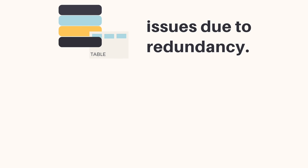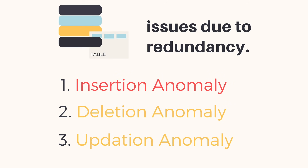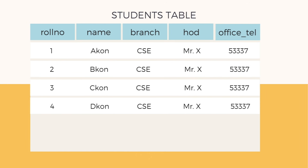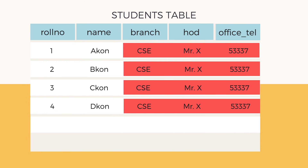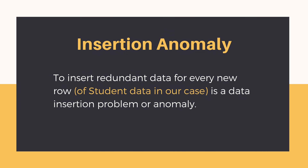There are three main problems that data redundancy causes: insertion anomaly, deletion anomaly, and updation anomaly. Let's start with insertion anomaly. If we have to add a fifth student, we will have to repeat the same branch information — branch name, HOD name, and telephone number — again. And if we have to enter data for a hundred more students, we have to repeat the data a hundred more times, which leads to insertion anomaly because the repetition of data only increases as we insert more entries.